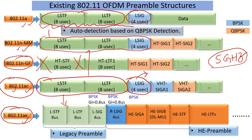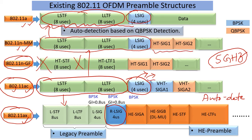We all understand each other with that common language, and we use the L-SIG header to convey the length of the transmission indirectly, so that the previous generation does not disturb it. We also add extra measures for auto-detection of the specific type of PPDU — that's why you find a repeated L-SIG in 11ax, or something using QBPSK, something slightly different.